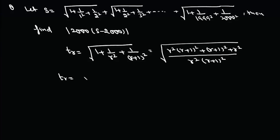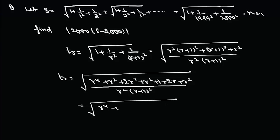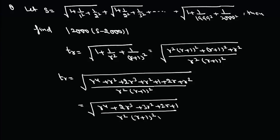Expanding the numerator, we get r⁴ + 2r³ + r² + r² + 2r + 1 + r², which simplifies to r⁴ + 2r³ + 3r² + 2r + 1, all over r²(r+1)².